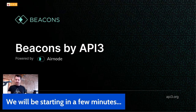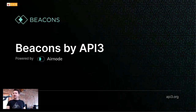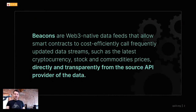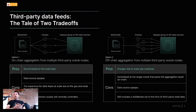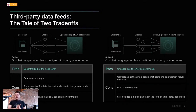Beacons are a protocol by API3 that allows data providers to create first-party operated data feeds. We've done this to allow smart contracts to call frequently updated values like prices and commodity prices directly and transparently from the source API provider. We identified issues with third-party data feed architecture — broadly speaking, these can be described as on-chain and off-chain aggregation.